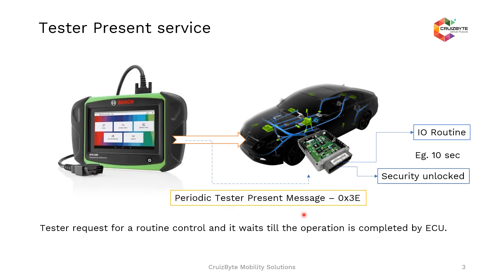This Periodic Tester Present Message can be configured to request from the ECU with a response or without a response. Without a response is important and we will discuss that later. The Tester requests for a routine control and waits until the operation is completed by the ECU. During such time, a Periodic Tester Present Message will be sent. Also, in cases where security has to be unlocked in a diagnostic session, to maintain that security unlocked state and execute further services, you can also request the Tester Present Message.